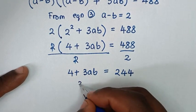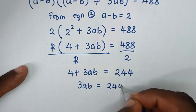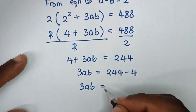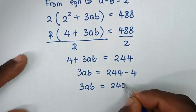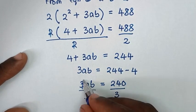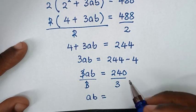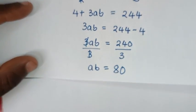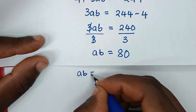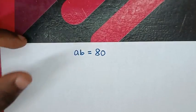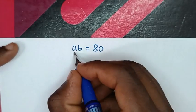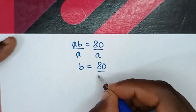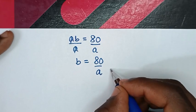Then we divide both sides by 2, giving 4 plus 3ab equals 244. Taking 4 to the other side: 3ab equals 244 minus 4, which is 240. Dividing by 3, ab equals 80. Making b the subject by dividing by a: b equals 80 over a. We'll call this equation 4.